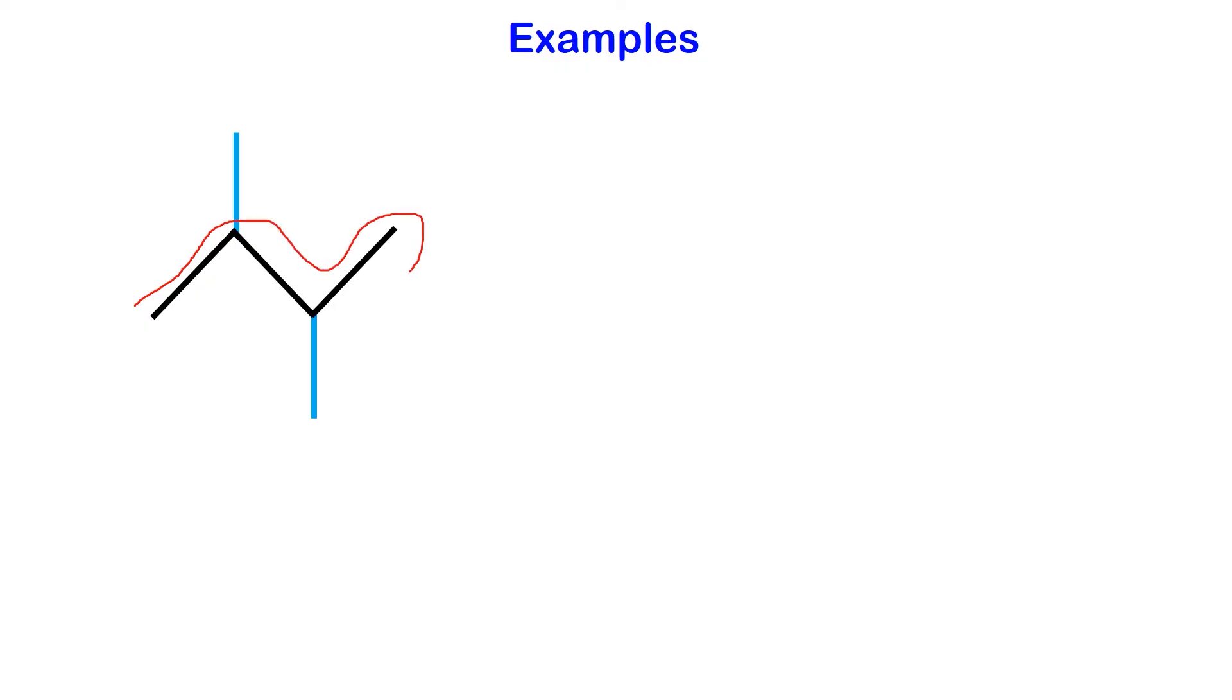Let's delve into another example. Begin by identifying the longest continuous carbon chain in the compound. The number of carbons in the backbone chain determines the parent name. Next, number the parent chain starting from the end that provides the lower number to the first branch.